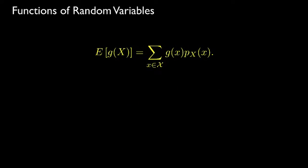In addition to the expected value for a random variable, we will often find it useful to determine the expected value for some function of a random variable. The expected value is defined as the summation of the product of the function applied to all the values that the random variable can take with the probability that the random variable takes those values.